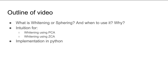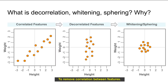What is whitening or sphering, and when and why do we use it? I'll go through the intuition behind this method using PCA and ZCA — Principal Component Analysis and Zero Component Analysis — and finally we'll look at a brief implementation in Python before moving on to coding in Jupyter Notebook.